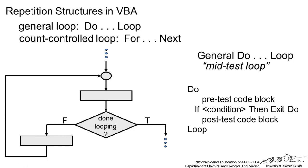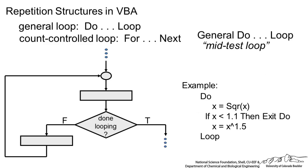You can set up this loop and the do loop will keep going until this condition is met. An example of this, let's say we define x is going to be the square root of x. We are redefining the new x as the square root of the old x. If x is less than 1.1, then we exit the do. If not, we redefine x as x to the 1.5. Keep looping until x becomes less than 1.1 and when x becomes less than 1.1, then we actually exit this loop and we can move on.